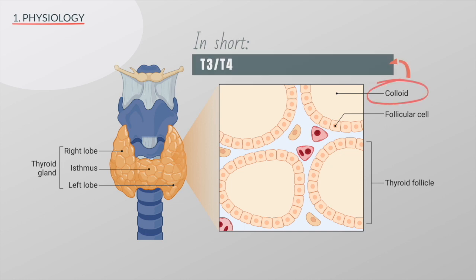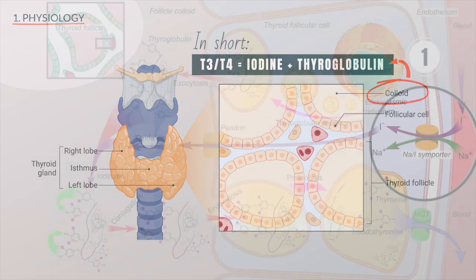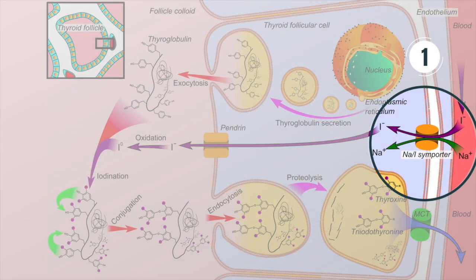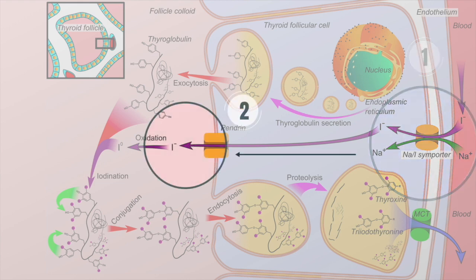The thyroid hormones are produced in the colloid of the thyroid when iodine attaches to a glycoprotein called tyroglobulin. Let's look at this process in a bit more detail. Iodine ions are actively transported across the cell membrane from the bloodstream into the cytosol. As a result, the concentration of iodide ions trapped in the follicular cells is many times higher than the concentration in the bloodstream.